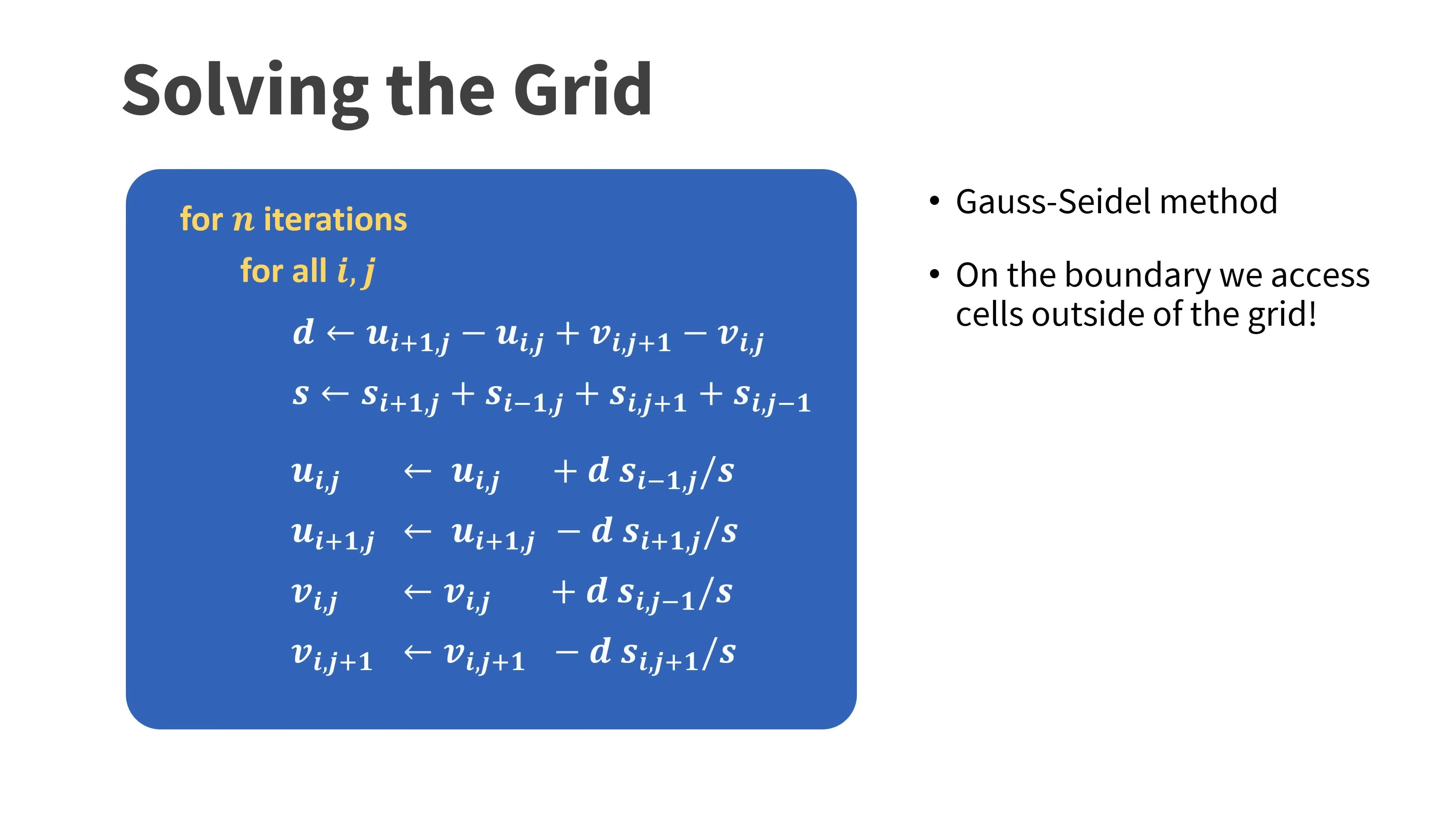We have to be careful though. On the boundary we access cells outside of the grid. One solution to this problem is to add border cells that we do not change. We either set them to walls or copy the values of neighbor cells that are inside the grid.